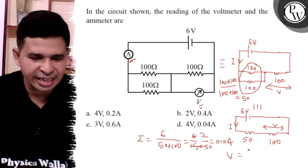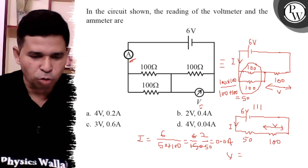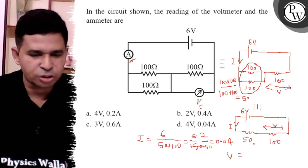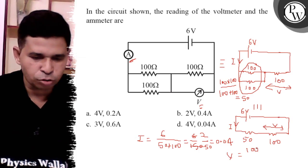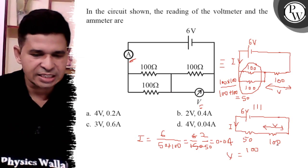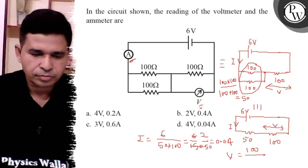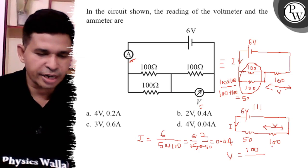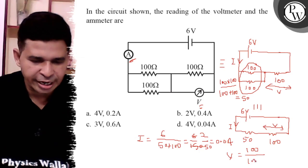But what is the voltmeter reading? Because 6 volt is divided in the ratio of 100 is to 50, and our interest is in the 100 ohm, so 100 upon 100 plus 50 into 6, so it is 4 volt.